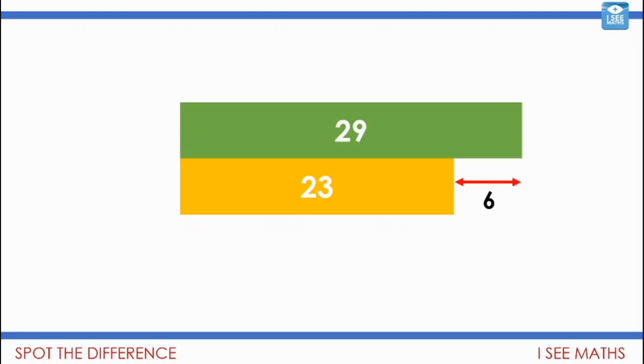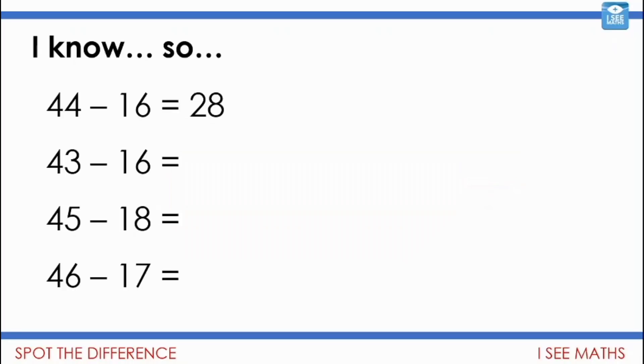You might also hear the little singing of my daughter in the background. Let's have a look at these questions. I call these I know so. And it's because I'm not doing four different calculations there. I just know one fact and I use it to work out another one. 44 subtract 16 is 28. 43 subtract 16. Well it's one less because 43 is one less than 44. 27.